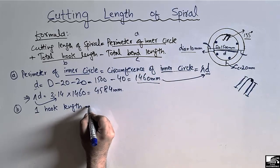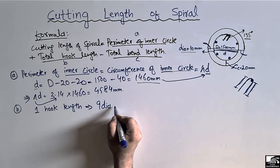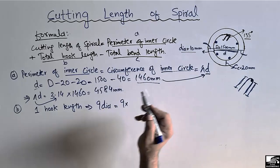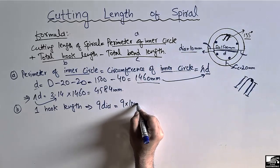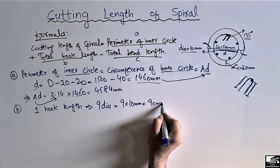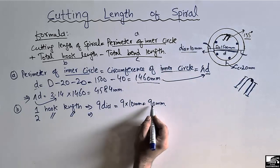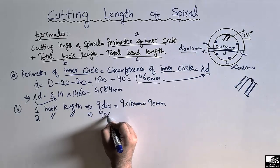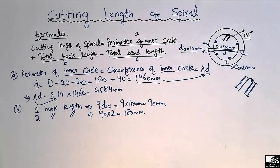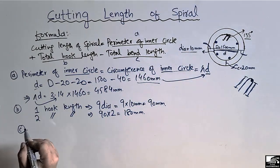According to the standard, one hook length equals 9 times the diameter of the bar. So one hook length = 9 × 10 = 90 millimeters. Since we have two hooks, the total hook length = 2 × 90 = 180 millimeters. This is our total hook length, B.